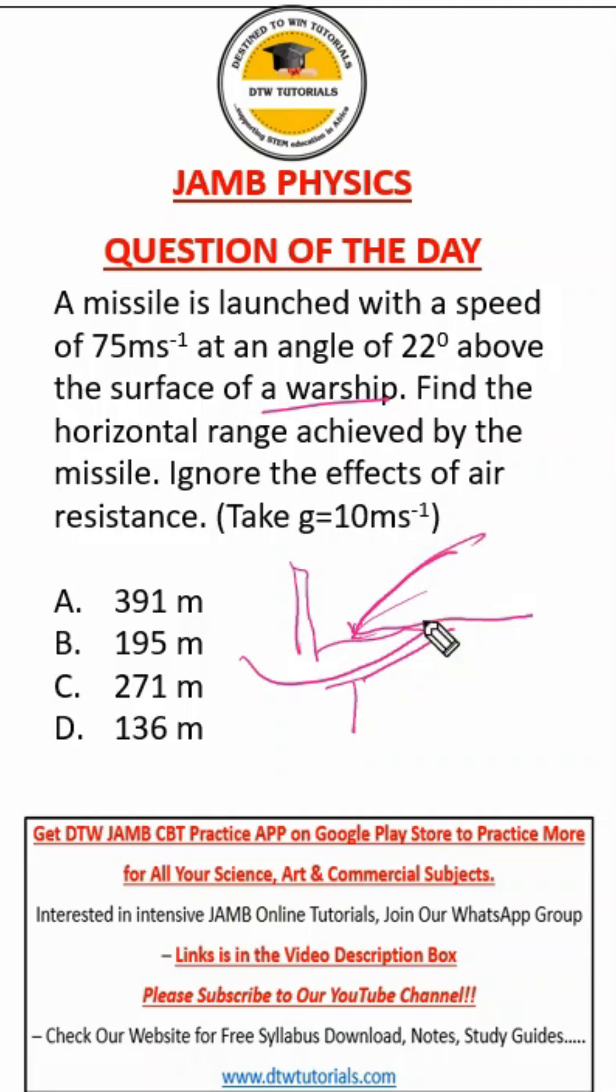What is our formula for finding the range? Remember, range R is equal to u squared sine 2θ over g. Your projectile, make sure you know those formulas.